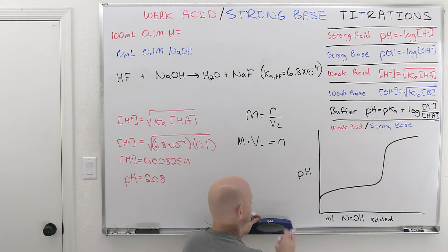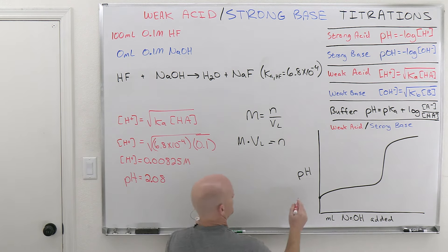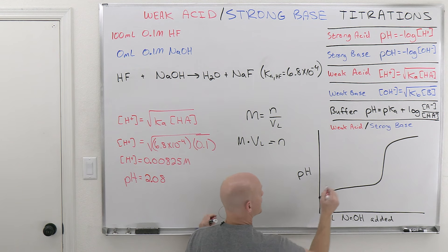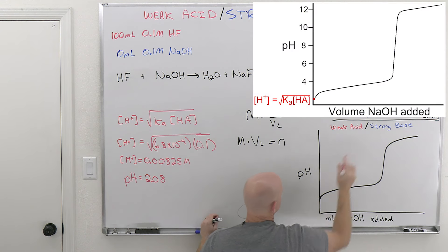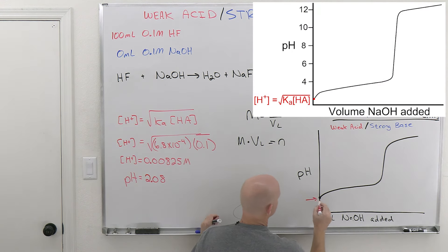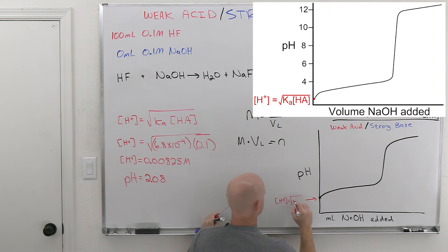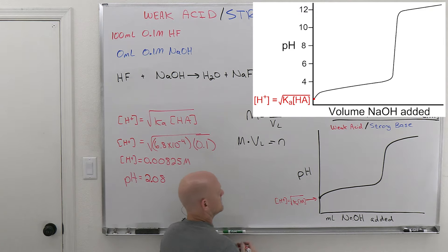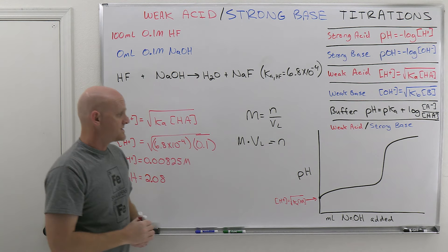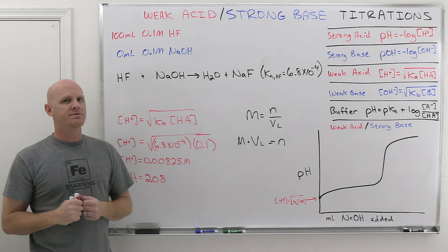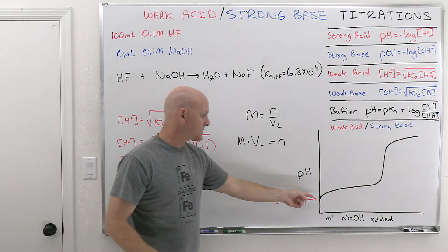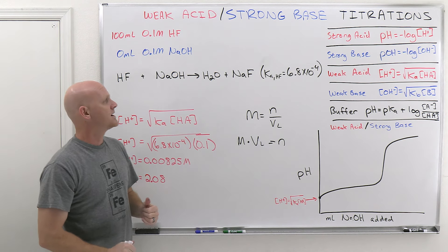So for that initial point on the titration curve for a weak acid strong base titration, you just have a weak acid, and it's the square root of Ka times the acid concentration. That's the initial point — not really properly part of a titration, but it is a point on the curve, so we'll include it.